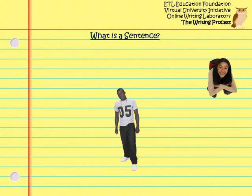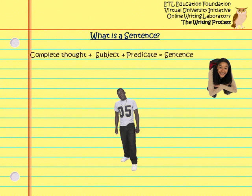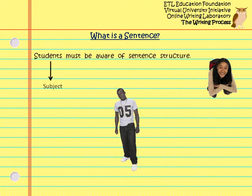I know this is pretty basic, but it's worth a quick review. So what is a sentence? It is a group of words that makes a complete thought and contains a subject and predicate. The subject tells what or who the sentence is about and always contains a noun or pronoun. The predicate always contains a verb and tells what the subject is doing or being.